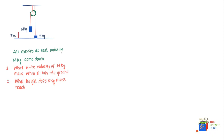Let's solve part one first using the work-kinetic energy theorem, which says that the final kinetic energy of a mass minus its initial kinetic energy equals the work done by various forces on the mass. There are only two forces acting on the 14 kilogram mass: the force of gravity acting downward, which we'll call F1, and the tension acting upward, which we'll call T. The same tension T is also pulling the 8 kilogram mass.